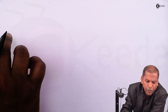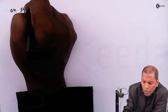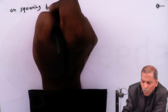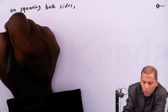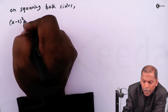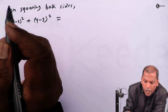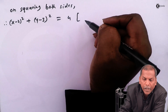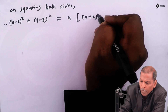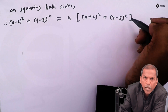Therefore, the next step will be: on squaring both sides we get 4 times [(x minus 2) whole squared plus (y minus 3) whole squared] is equal to 4 times [(x plus 2) whole squared plus (y minus 5) whole squared].